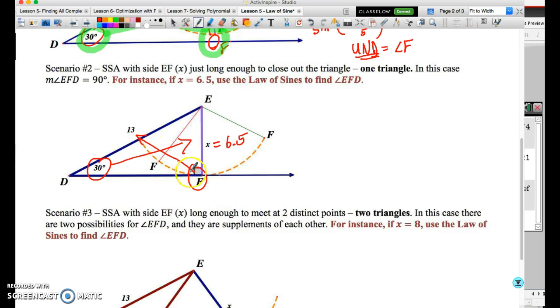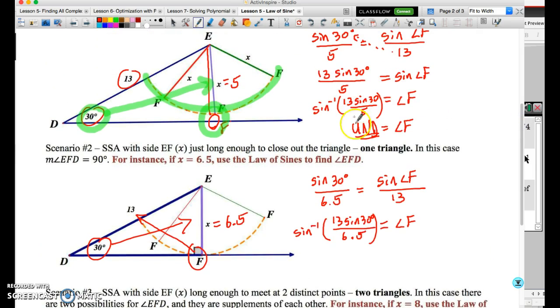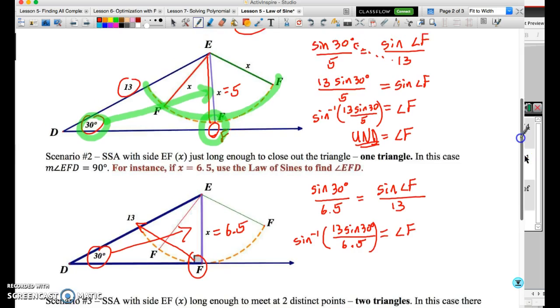But this is how we're going to set the problem up. If we didn't know what the measure of angle F was, we would be doing the following. Exactly the same as before, we're going to say sine of 30 degrees over the side opposite, which is 6.5, is going to equal sine of angle F. And that's going to be divided by the side opposite, which is going to be 13. I'll skip a couple of steps here because this is the exact same as before. So we're going to get angle F is going to be sine to the minus 1 of 13 sine 30, all divided by 6.5.